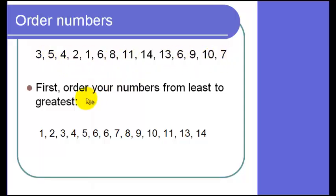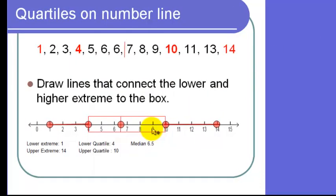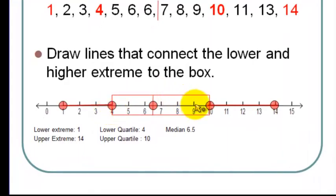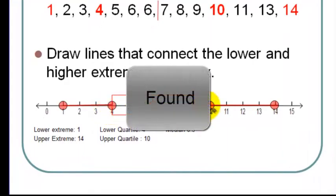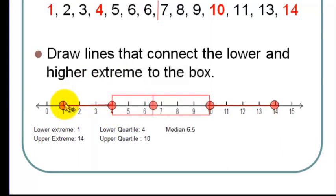First, we order our numbers from least to greatest, and then we find the median, and then the lower quartile, and then the upper quartile. We also have the lower extreme and the upper extreme. So the lower extreme that we got before was equal to 1, and then the upper extreme was equal to 14.